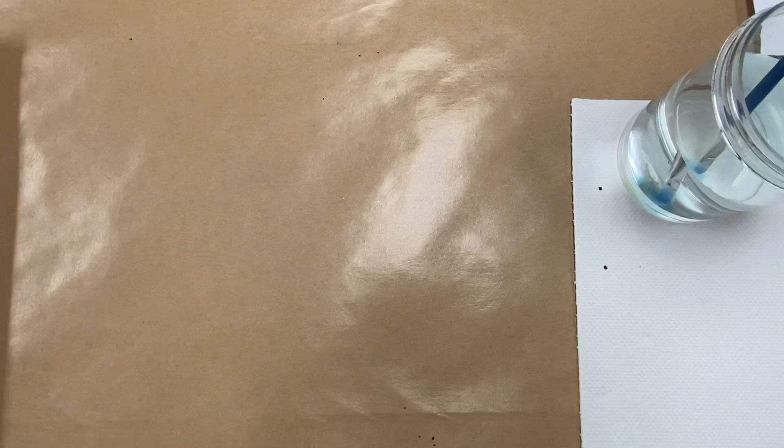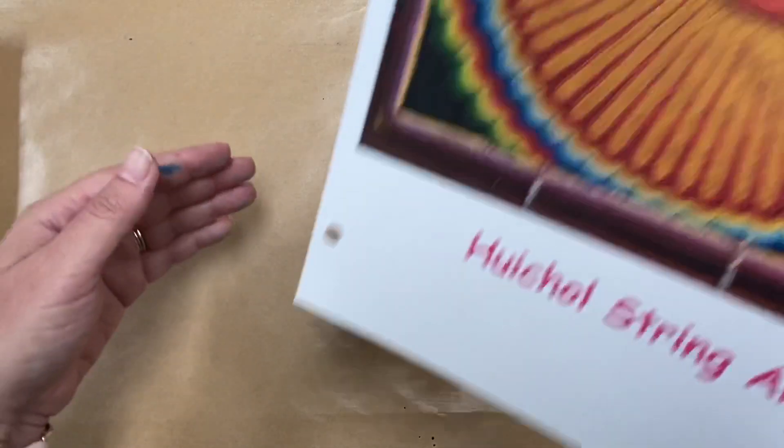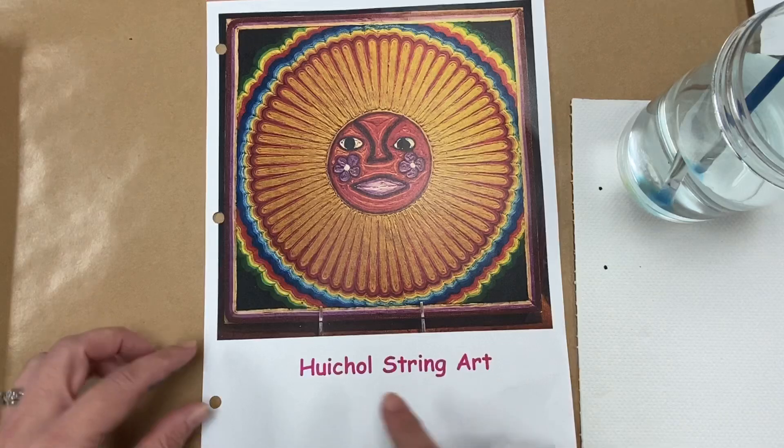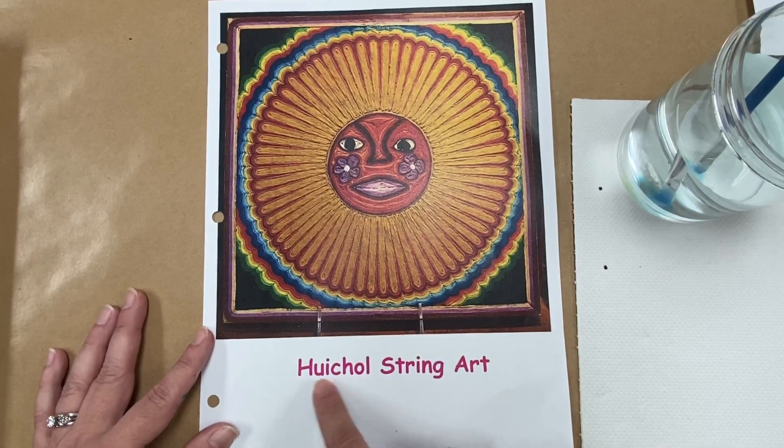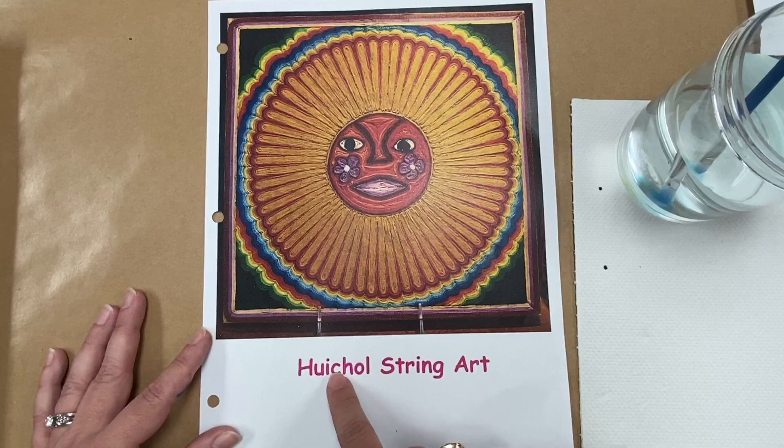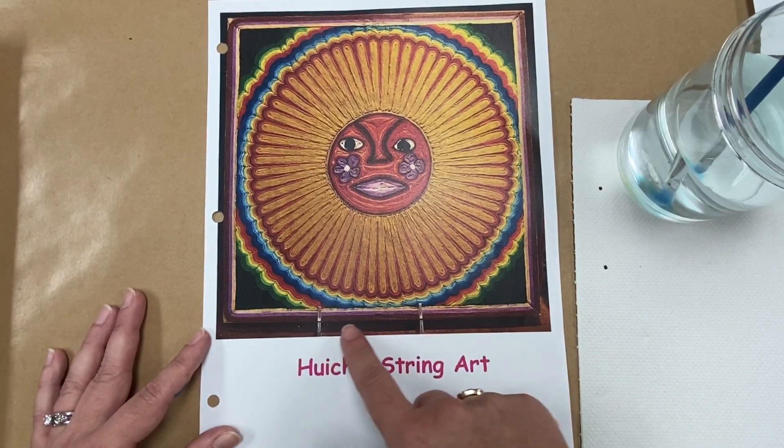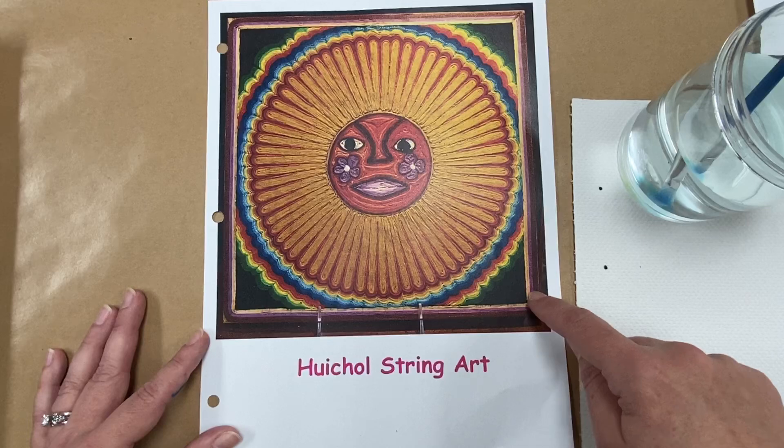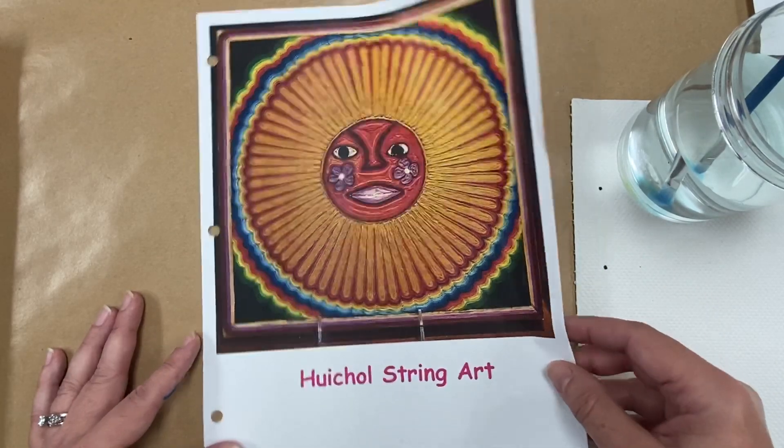And I'm going to show you some examples. This is called huichol string art. So you see here this says huichol. It doesn't look like that would say huichol, but that's a Spanish word and so that's how you pronounce it. And this type of artwork is a folk art that's created using string, yarn, and beads. And you see here they made this beautiful sunshine. Isn't that pretty?